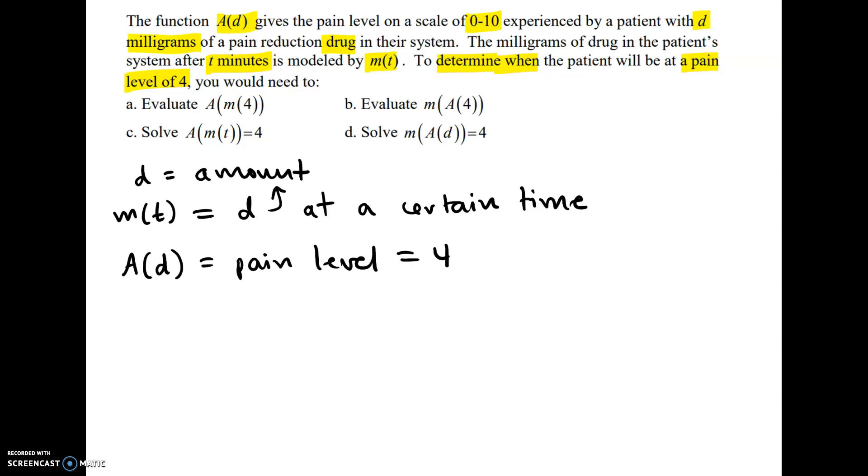We don't know the time when the patient will be at pain level 4—that's what we're searching for. Since M(t) gives us the amount of drug at a certain time, we need to make a composite function with the A function.